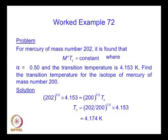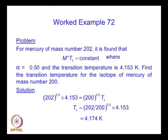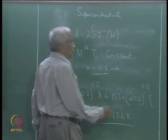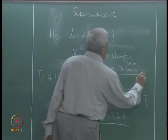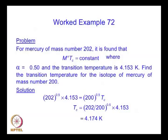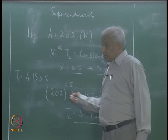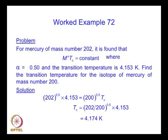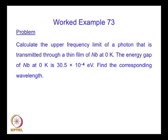This isotopic dependence of the critical temperature, with the value α = 0.5, gave a clue to the mechanism of superconductivity — the phonon mechanism. If phonons are involved, there will be a mass dependence given by the simple harmonic oscillator model as 0.5. There are many instances where this isotopic dependence is satisfied with a different value of α, because there can be many mechanisms other than the phonon mechanism. But in the case of mercury, this relation is found to be satisfied to a considerable degree of accuracy.